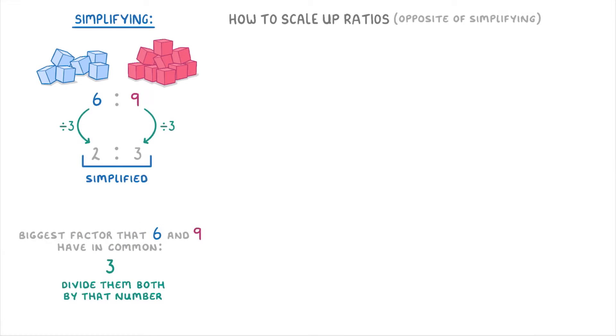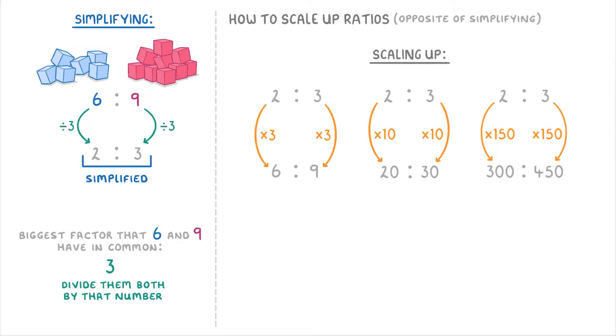Scaling up is just the opposite of this, so going from a more simple ratio like 2 to 3 and multiplying both sides to get a less simple ratio like 6 to 9 for example. We could also scale up to 20 to 30 because that would just mean multiplying both sides by 10, or up to 300 to 450 by multiplying both sides by 150.